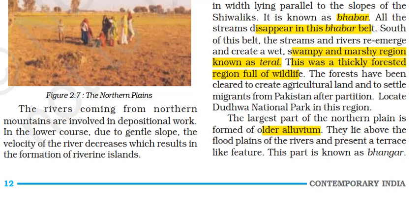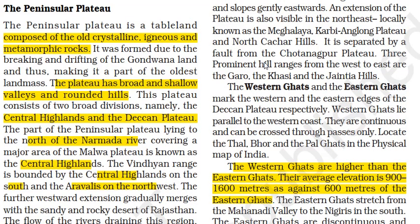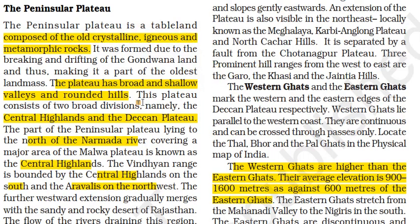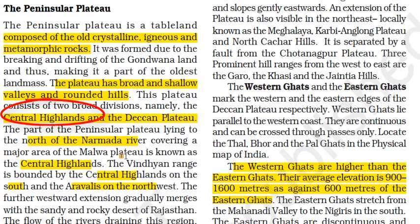The Peninsular Plateau is a tableland composed of old crystalline, igneous and metamorphic rocks — one of the oldest landmasses of the world. This plateau has broad, shallow and rounded hills. It consists of two broad divisions: the Central Highlands and the Deccan Plateau.